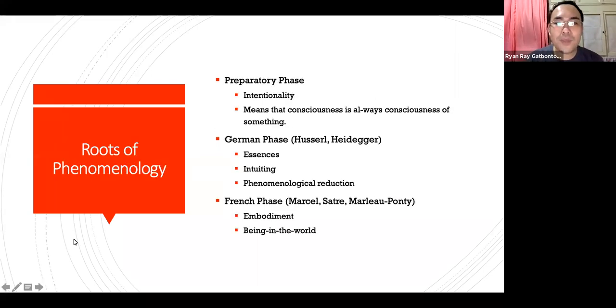Now, the roots of phenomenology can come in three different phases. It comes from the preparatory phase, it also has roots from the German phase - the German philosophers - and also a French phase or the final phase. When we talk of preparatory phase, this is the initial phase of phenomenology as a philosophy, wherein the primary focus was given on intentionality, meaning that the consciousness is always conscious of something. It means that our mind, our consciousness, is conscious of the things around us. It talks about the experience that we have, the things that are around us and how we perceive it.